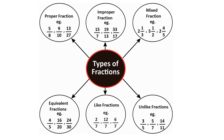The next one is like fractions. In like fractions, the denominators are the same. For example, 2 upon 7, 12 upon 7, 6 upon 7. You can see that the denominators of all three fractions are the same. And the last one is unlike fractions. In unlike fractions, the denominators are different. For example, 3 upon 5, 5 upon 7, 14 upon 11.